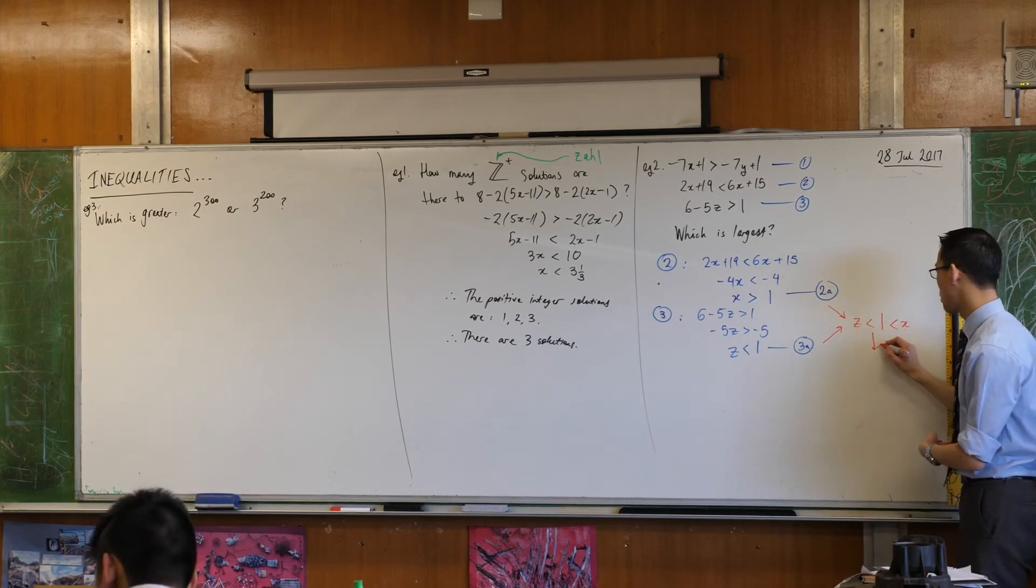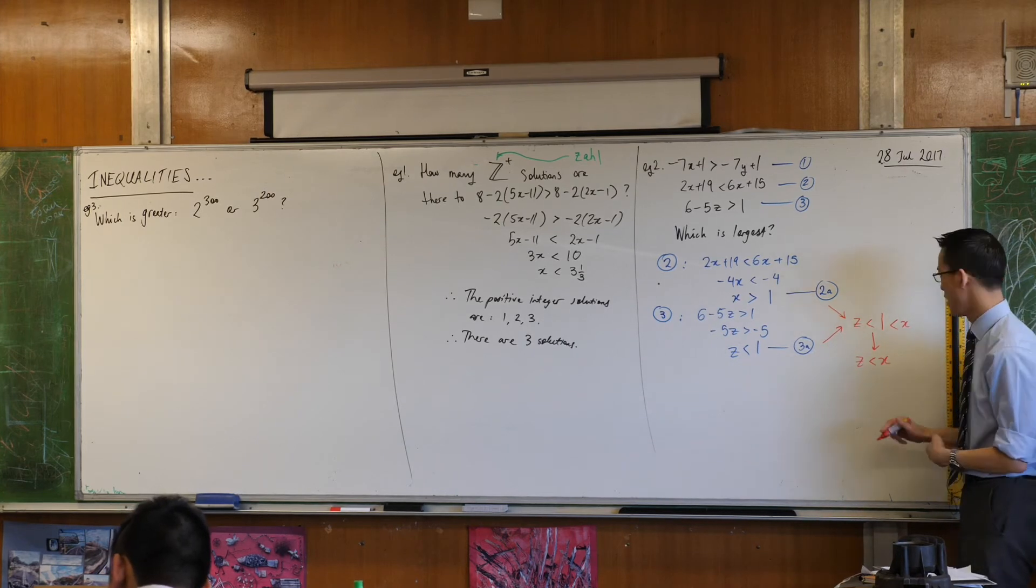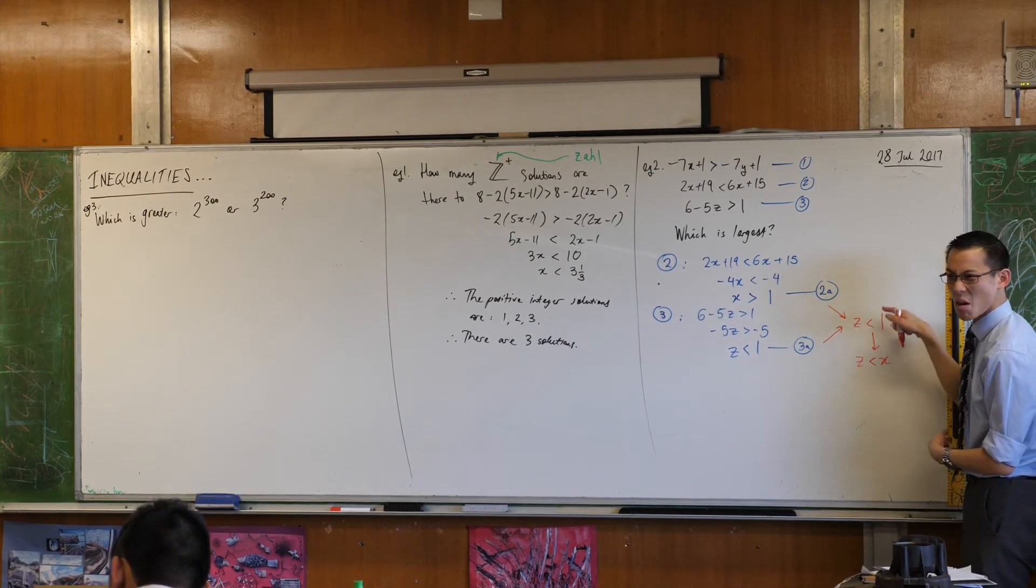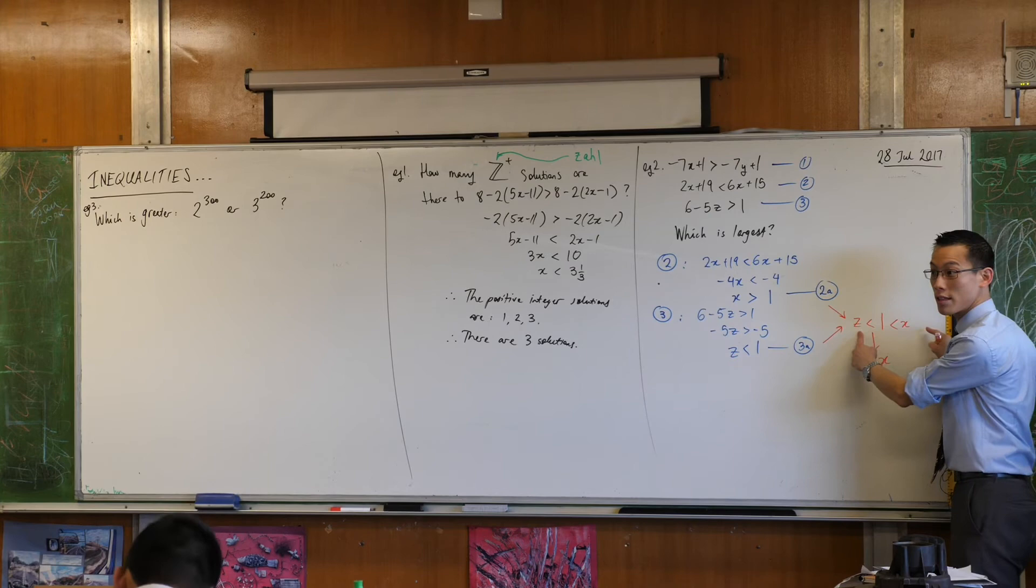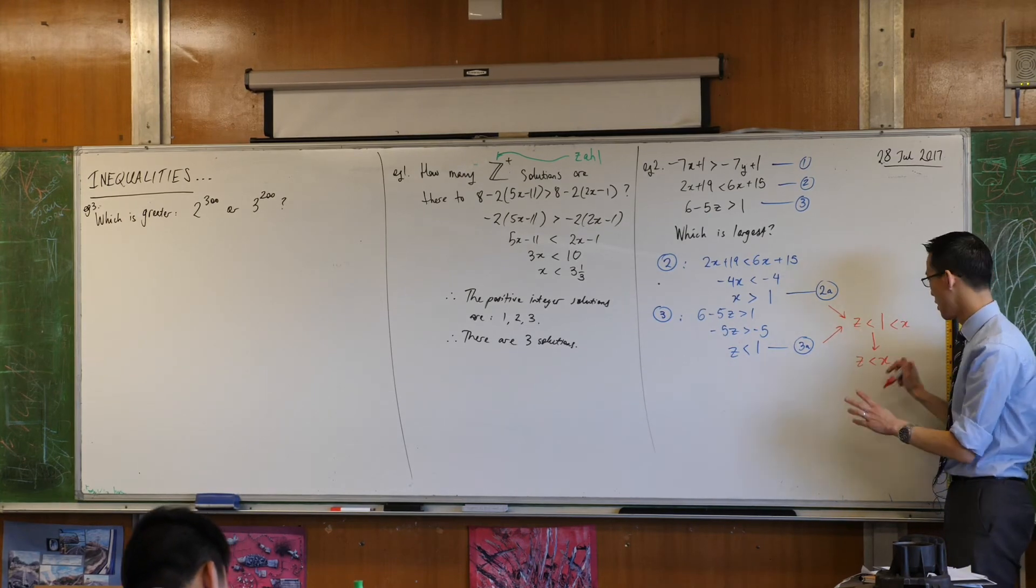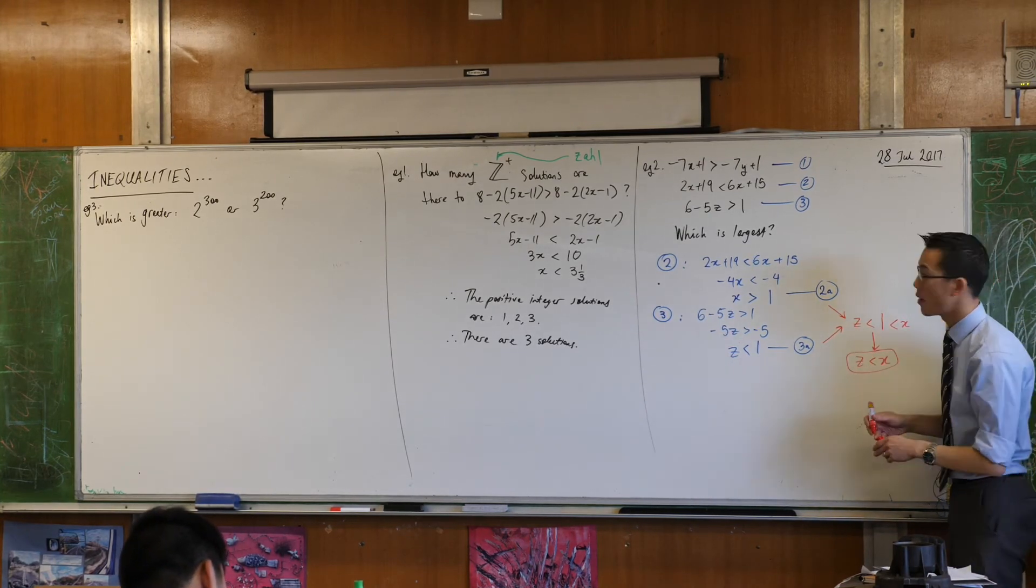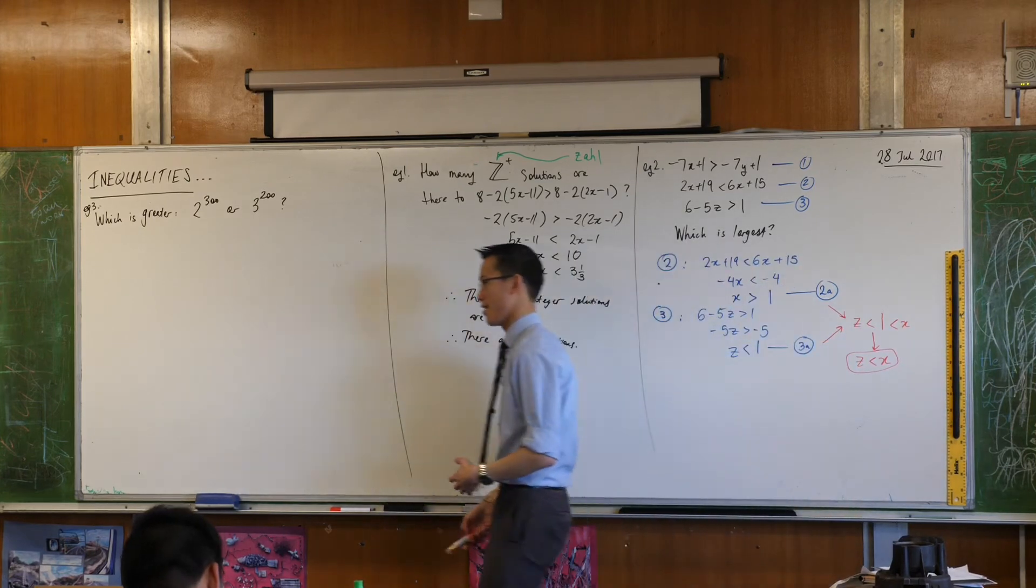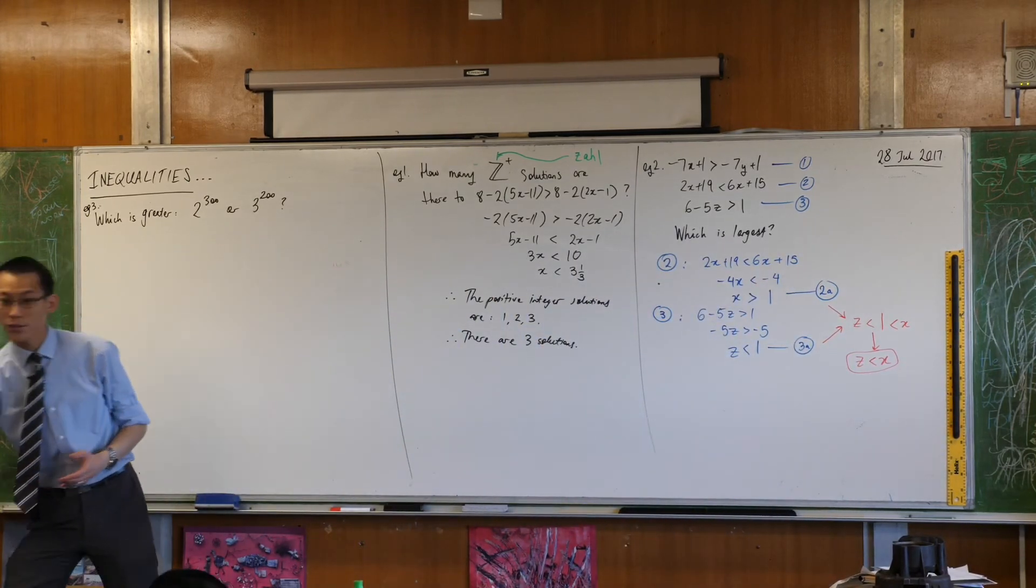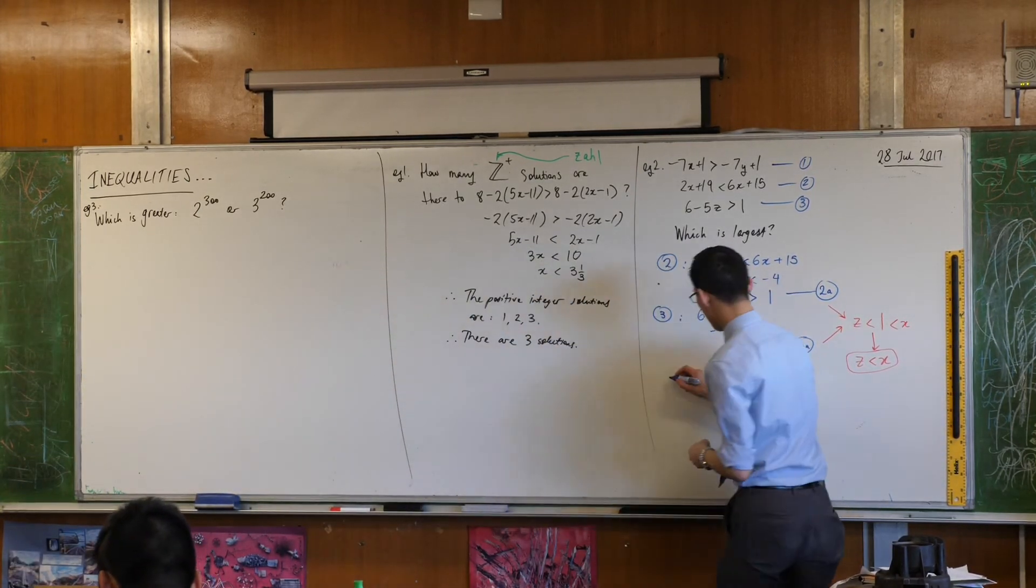But what that tells you is that z is less than x, because actually I don't need to really worry about 1. You can clearly see the order that this is going in. Does that make sense? So I'll just file that in the back of my mind. The last inequality that I have to get information out of is the first one. So, one.